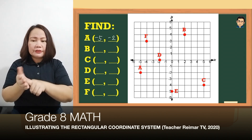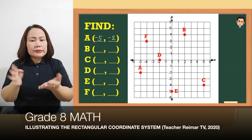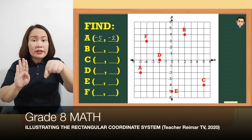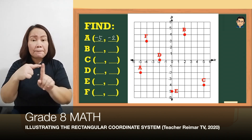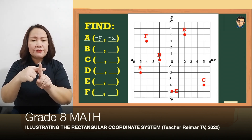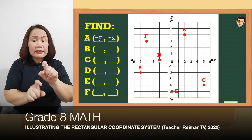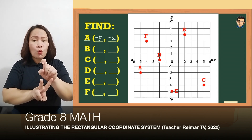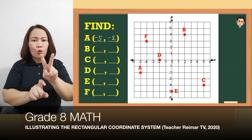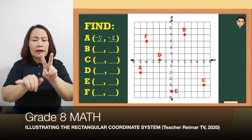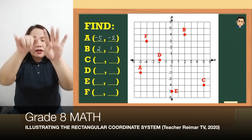Yung B naman po ay nasa quadrant 1, so pareho po silang positive. Mauna tayo dun sa 2 na nasa x-axis and then 4 na nasa y-axis. So yung coordinates po ng B ay (2, 4).